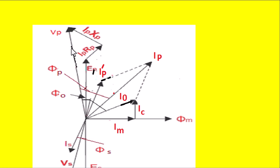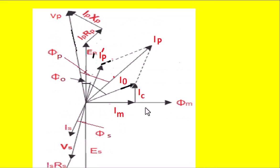Adding EP, IP·RP, and IP·XP vectorially, we get the applied voltage VP (also called V1). The angle between I0 and VP is the no-load power factor angle, whereas the angle between IP and VP is φP — the power factor angle of the transformer primary side. This completes the phasor diagram for lagging load considering leakage reactances X1, X2 and winding resistances R1, R2. The same procedure can be adopted for leading load by taking X1, X2, R1, R2 into account.